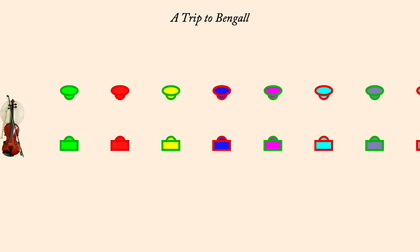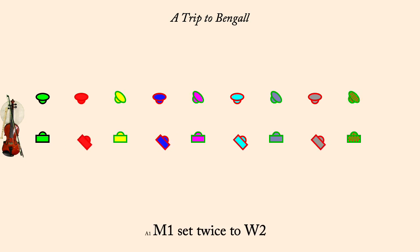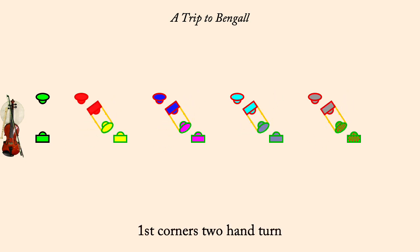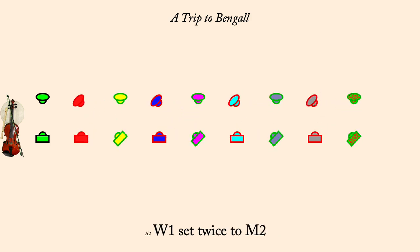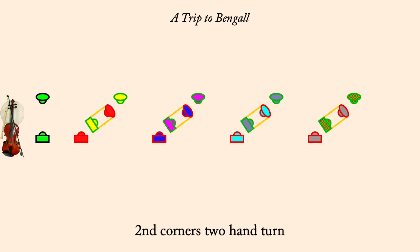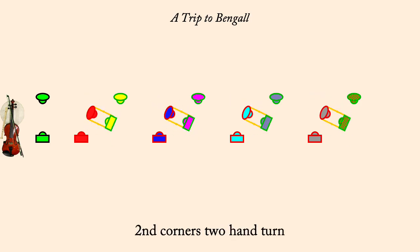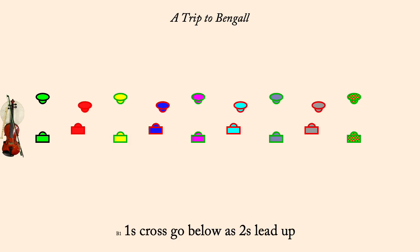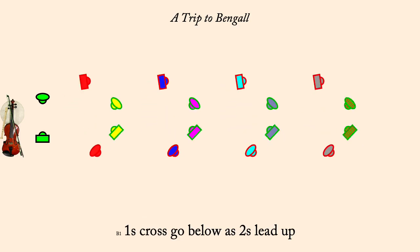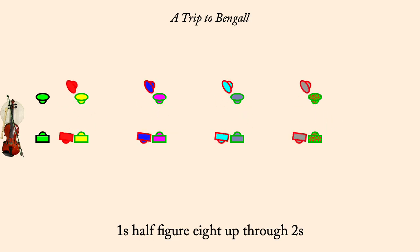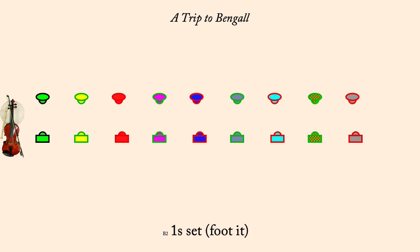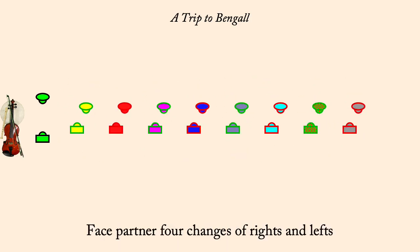Man one set twice to woman two. First corners two-hand turn. Woman one set twice to man two. Second corners two-hand turn. One's cross, go below as twos lead up. One's half figure eight up through twos. One's set, face partner, four changes of rights and lefts.